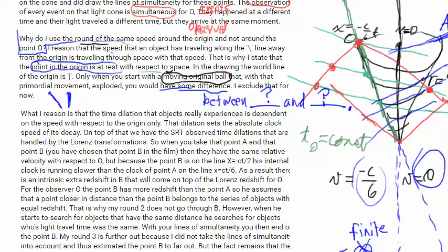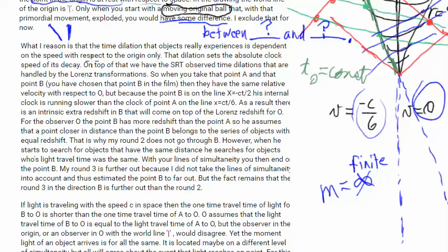He goes on to say he reasons that the time dilation that objects really experience — first of all, objects don't really experience time dilation. They experience time. They see other objects as time dilated, but their experience of their own time is pretty consistent. And they do not experience anything — time dilation — dependent on the speed with respect to the origin only. Not in special relativity.